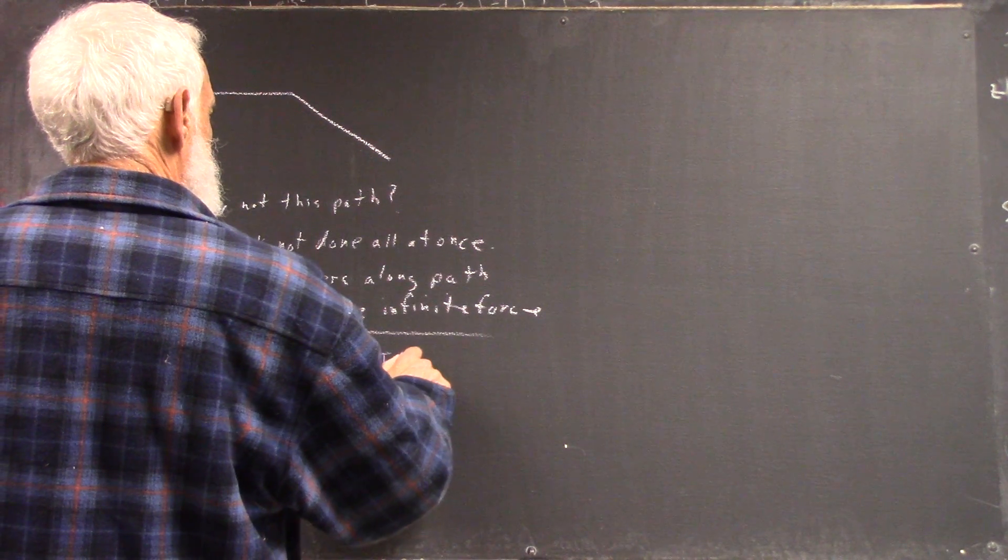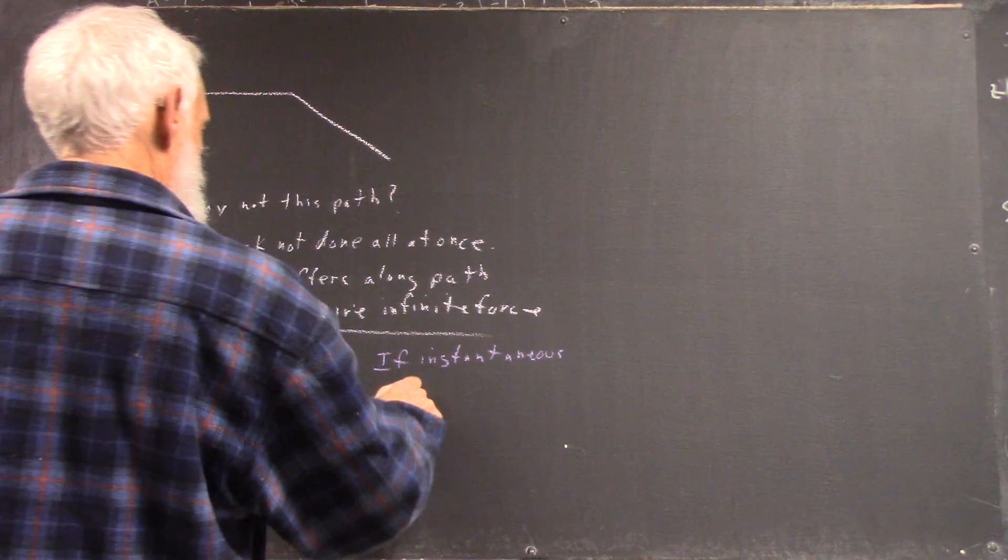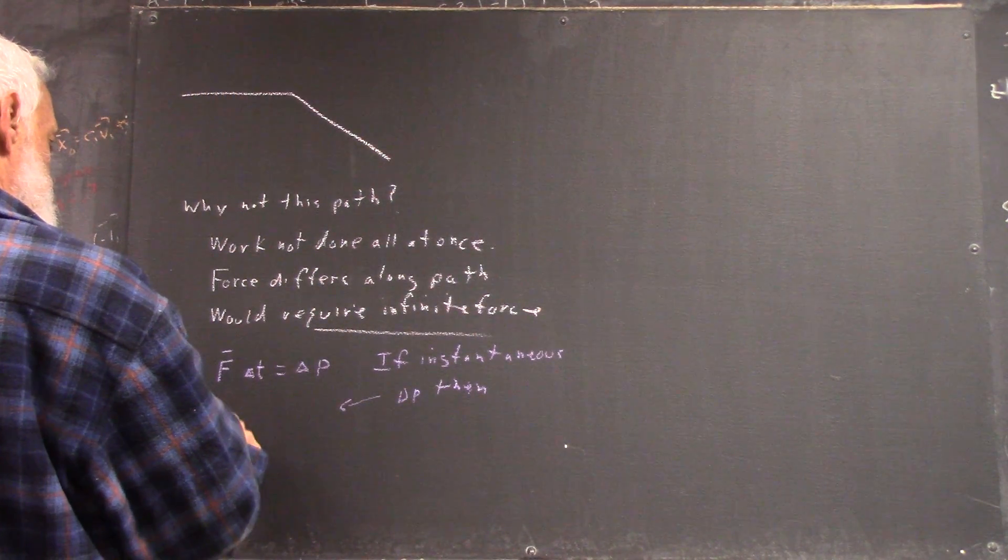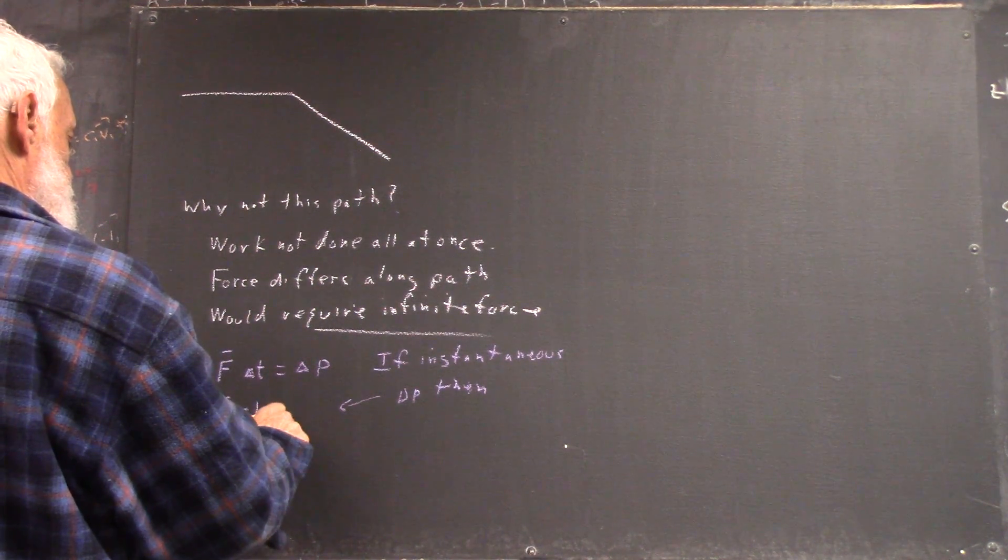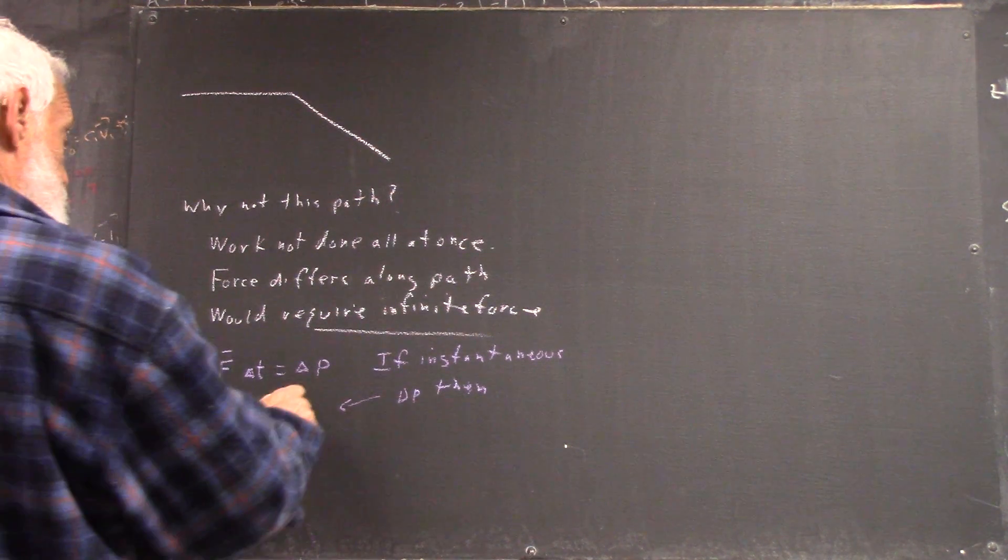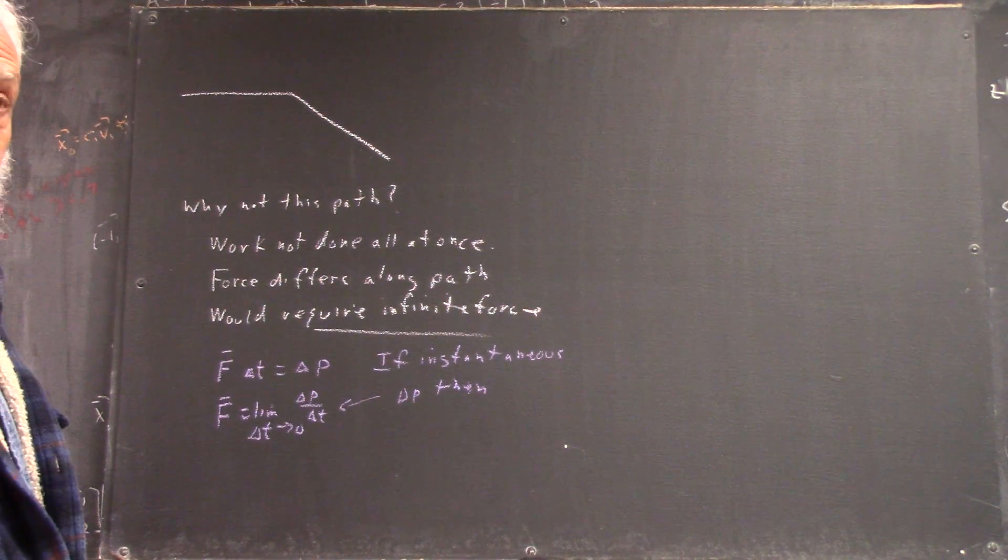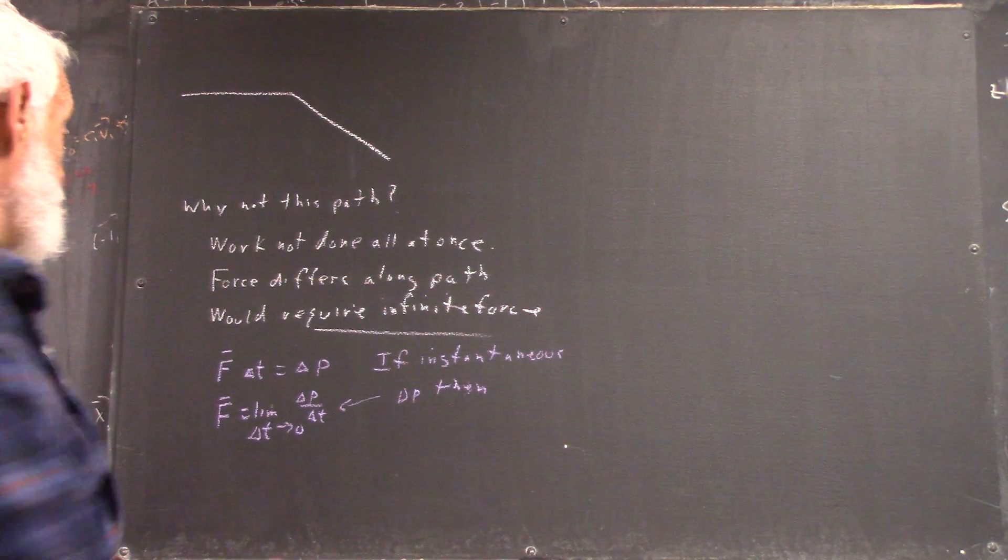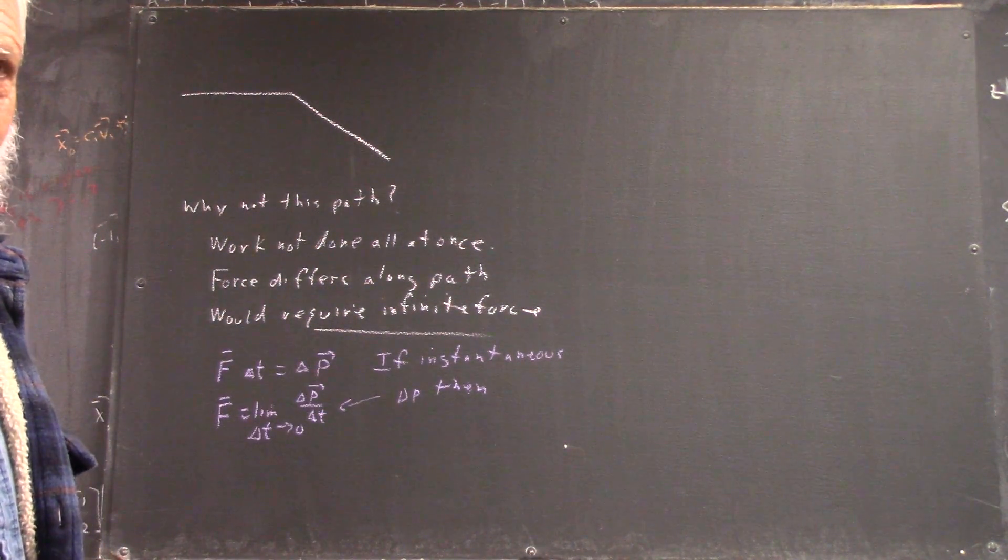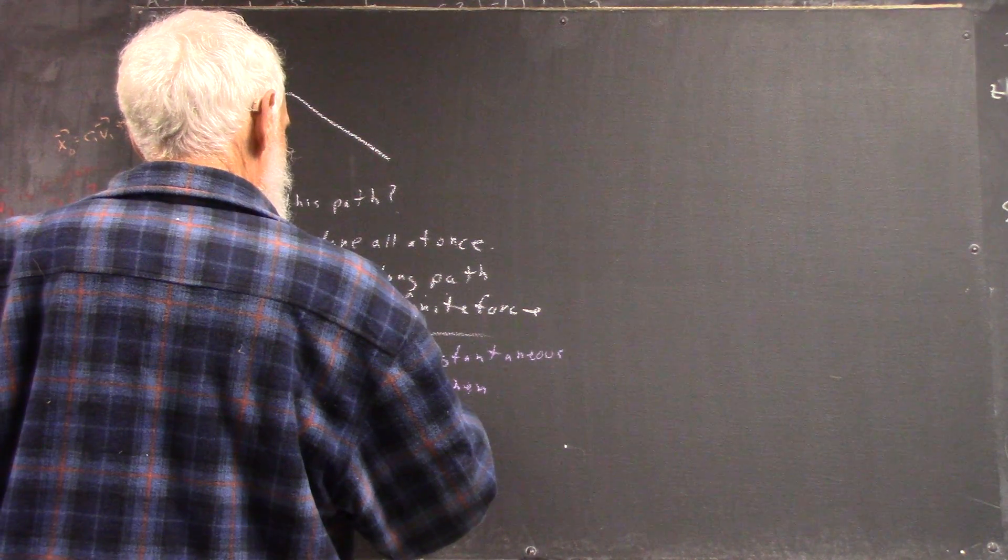So if instantaneous delta P, then what? F bar would be the limit as delta T goes to zero of delta P over delta T. What is P in that equation? Momentum. And it's a vector. You don't recognize it because you didn't put the arrow over it, right? Or maybe because you didn't read your book.